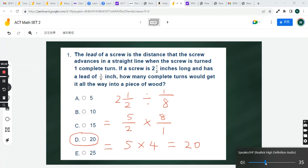The lead of a screw is the distance that the screw advances in a straight line when the screw is turned one complete turn. If a screw is 2.5 inches long and has a lead of 1/8 inch, how many complete turns would get it all the way into a piece of wood?